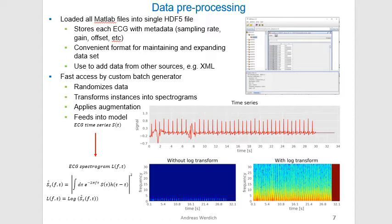The batch generator randomizes the data, transforms the instances into spectrograms — which are a mixture of time and frequency-dependent features — and then applies data augmentation for training before feeding the data into the model. On the lower right side, you can see the time series and the transform into the time and frequency-dependent log spectrum. We also apply a log transform, which better uses the dynamic range of the spectrogram.